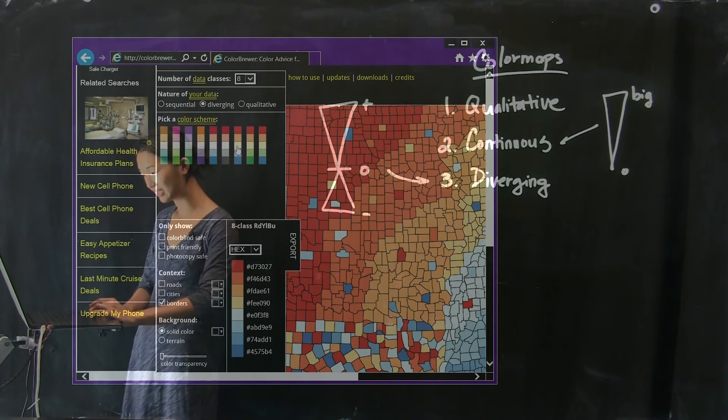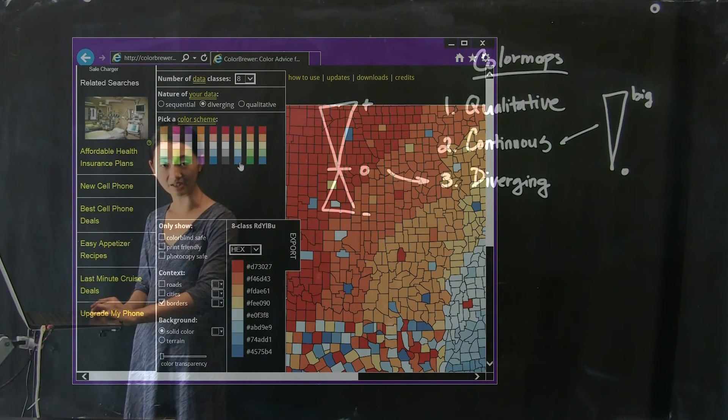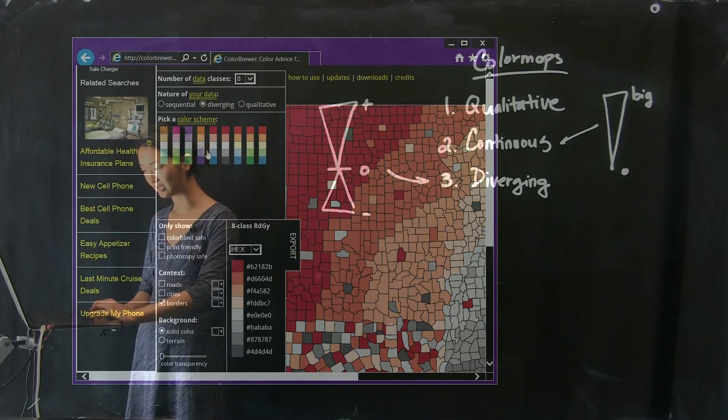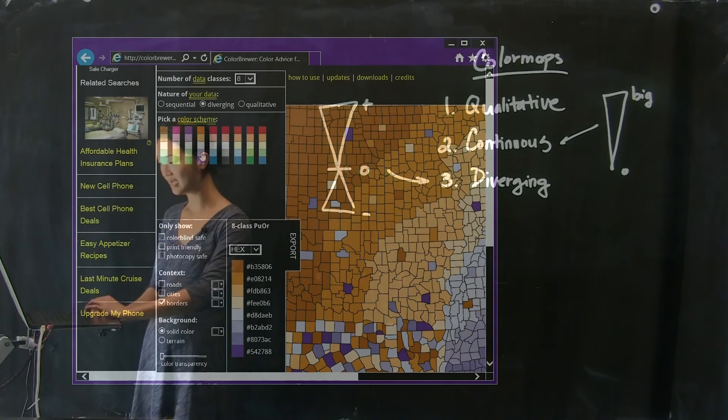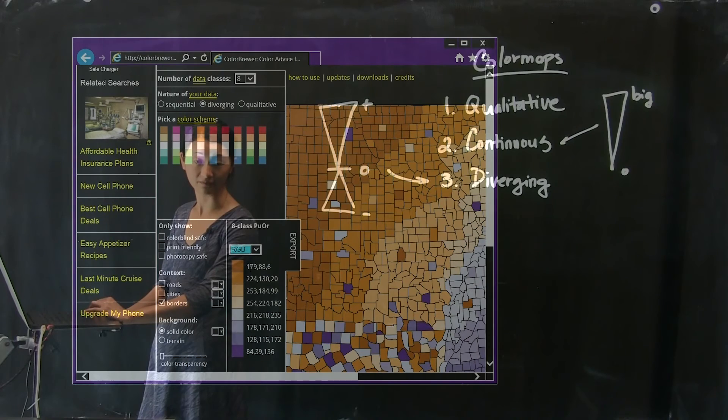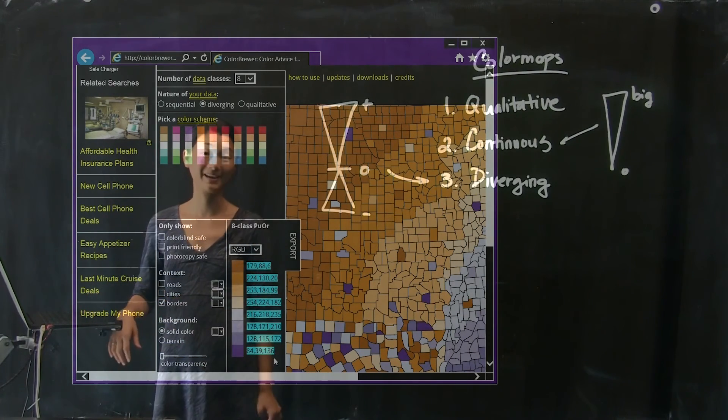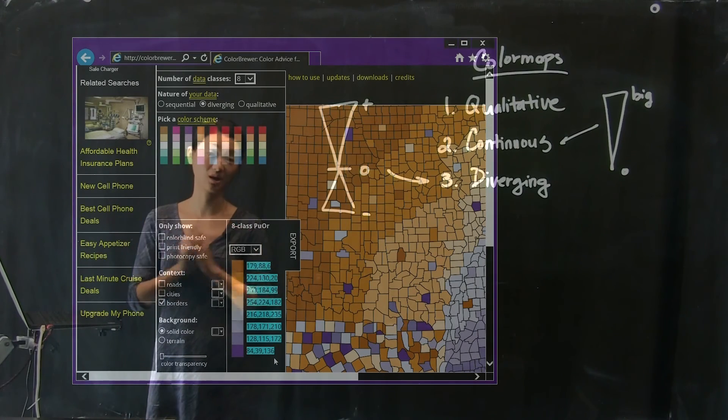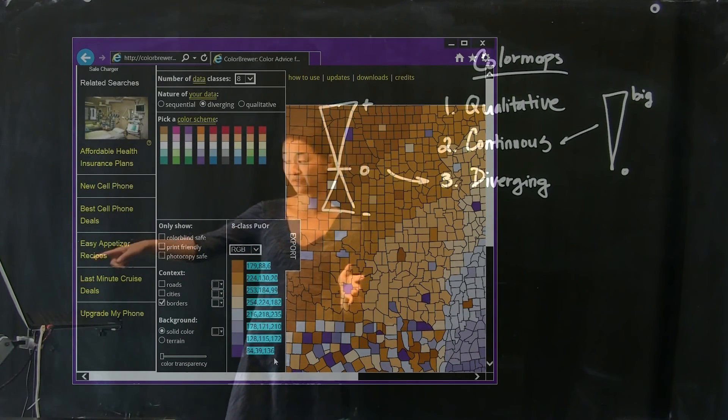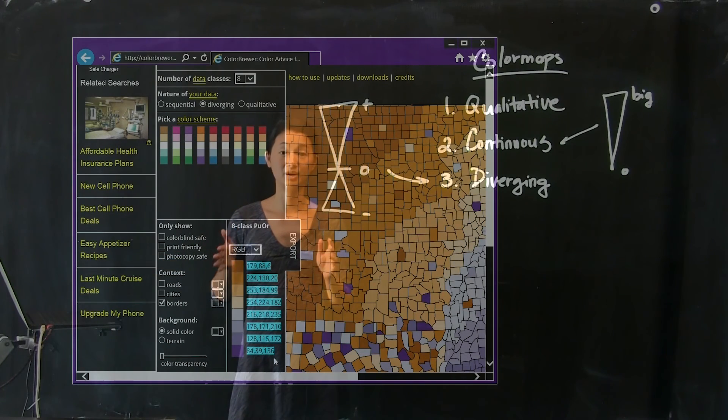So you can try out these color maps and look at how they look on a map. And importantly, you can export the RGB values of these data sets by simply selecting these numbers and pasting them into MATLAB and calling that your color map. Remember that the numbers in MATLAB need to be between 0 and 1, so if you paste these values, you have to divide everything by 255 to get them to be between the range of 0 to 1.